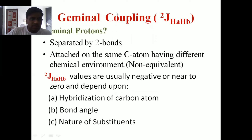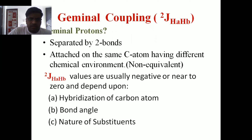Now we discuss the geminal coupling constant thoroughly. First of all, we should know about geminal protons — which type of protons are called geminal protons. When the protons are separated by two bonds, meaning the protons which are going to be coupled with each other are two bonds apart, such protons are called geminal protons. They are attached on the same carbon atom, having different chemical environments.